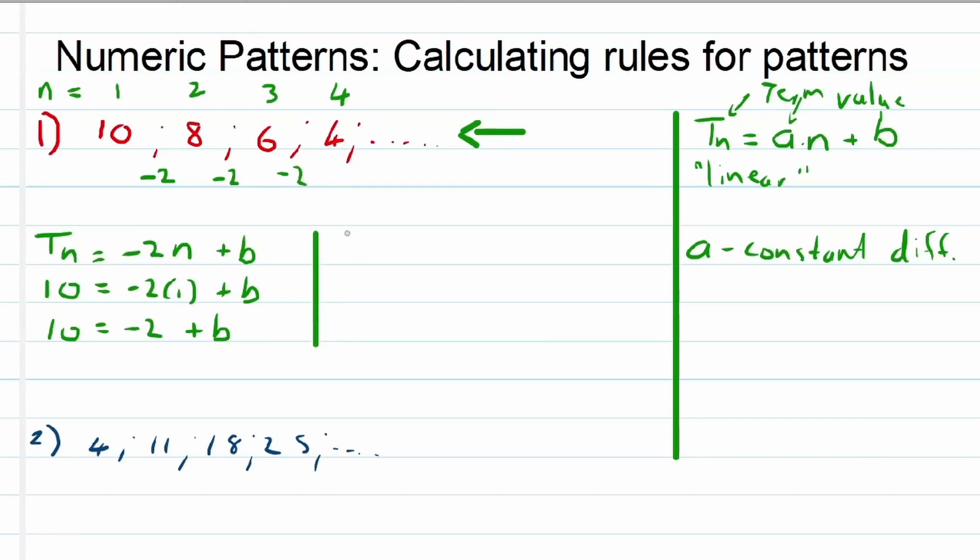Because 10 is equal to negative 2 plus what? We need to add a number of 12 so that we can actually have the 10 on the right hand side, the left hand side. My apologies. So our formula here is Tn equals to negative 2 times n plus 12. I'll write that in in a moment.